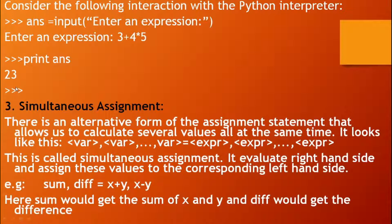Next, third assignment statement: simultaneous assignment. There is an alternative form of assignment statement that allows us to calculate several values all at the same time. It looks like this: variables, number of variables are assigned expressions. Every variable is separated by comma. This is called simultaneous assignment.